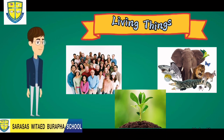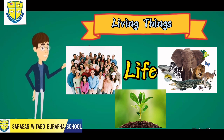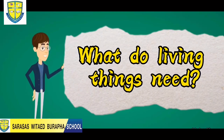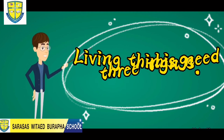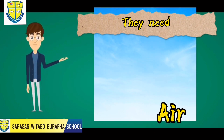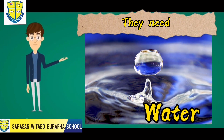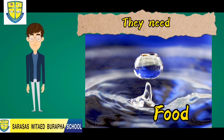Now that we all know the examples of living things, and all living things have life, we can identify what living things need. Living things need three things: air, water, and food.